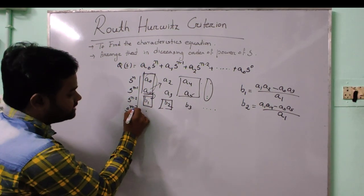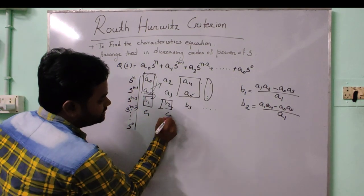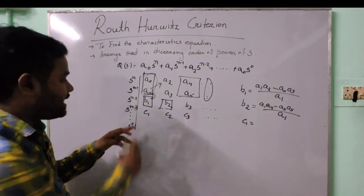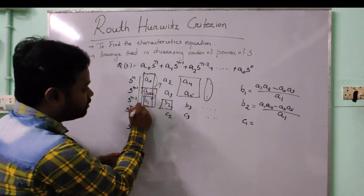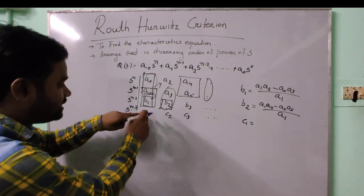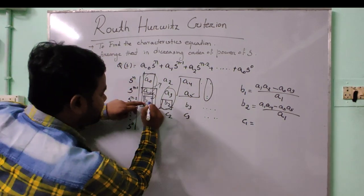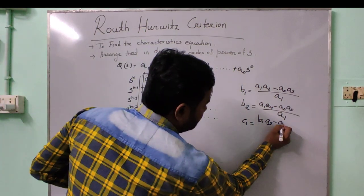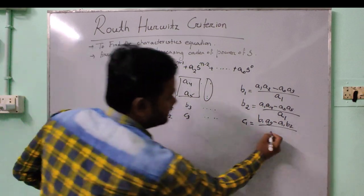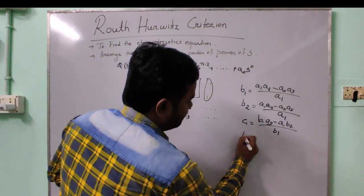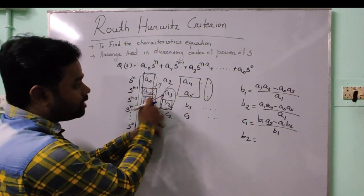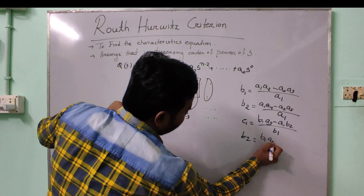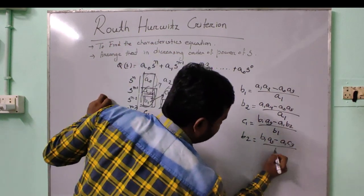For the fourth row, corresponding to s to the power n minus 3, we write c₁, c₂, c₃, and so on. The formula for c₁ is: c₁ equals (b₁ times a₃ minus a₁ times b₂) divided by b₁. Similarly, for the next element, we cross-multiply b₁ with a₅ and subtract a₁ times b₃, then divide by b₁. This pattern continues for all subsequent rows.